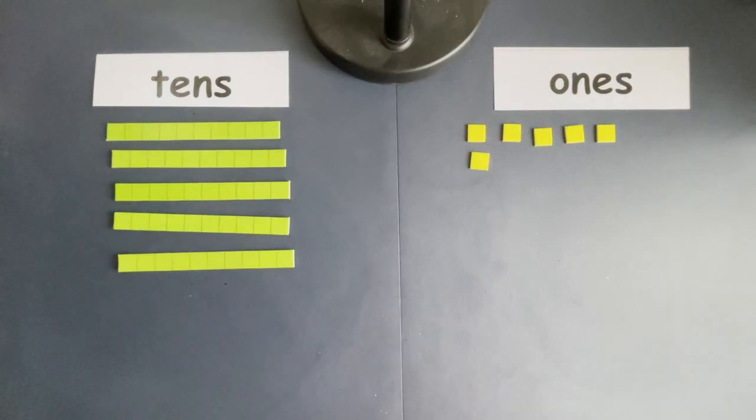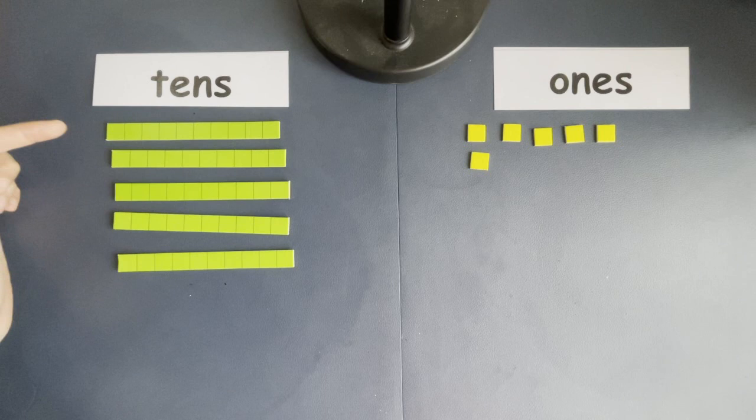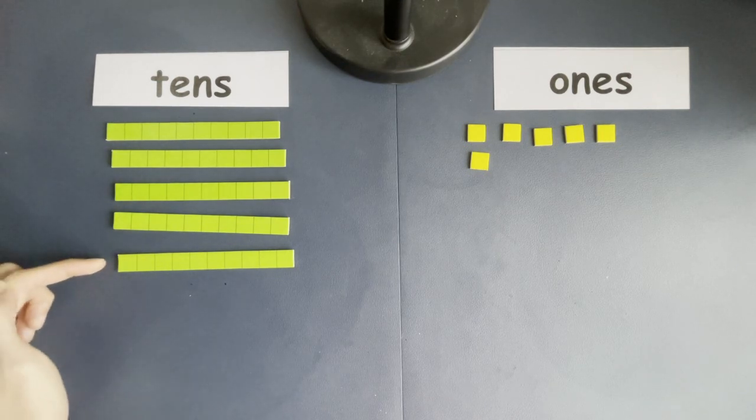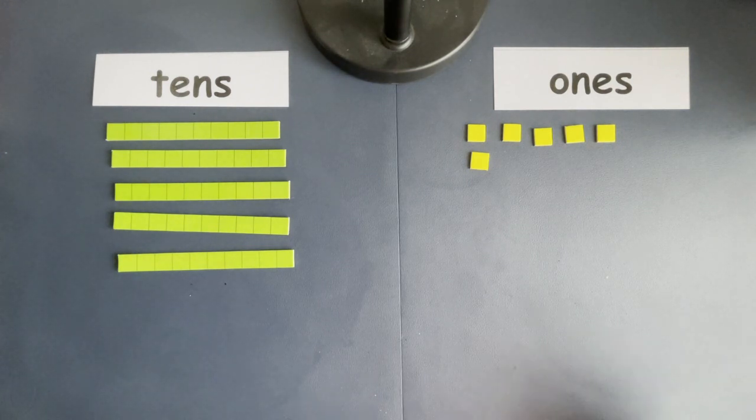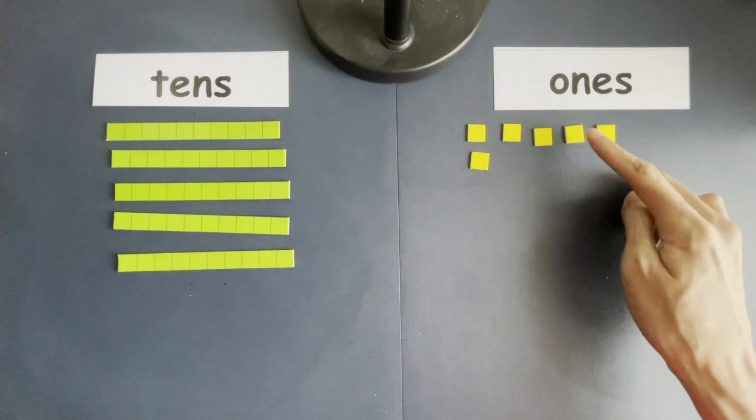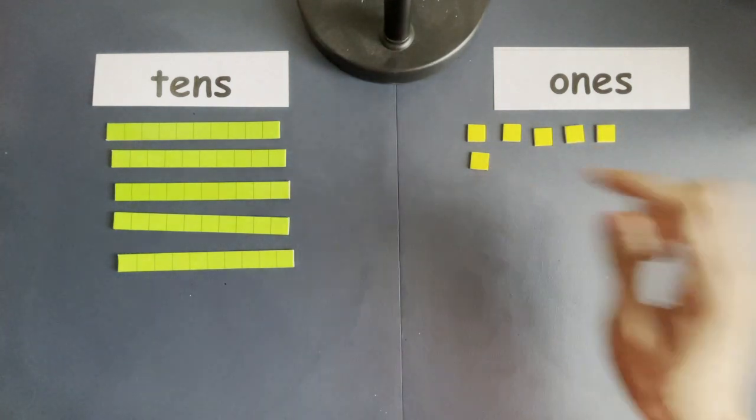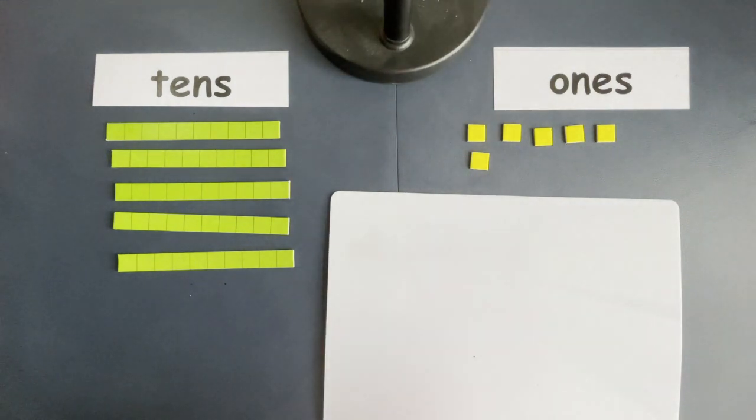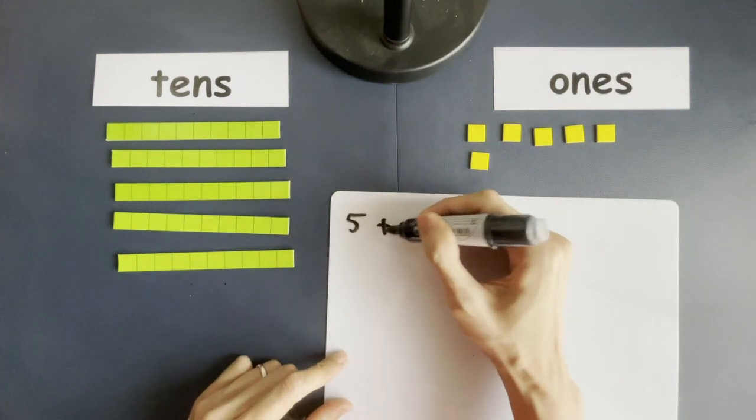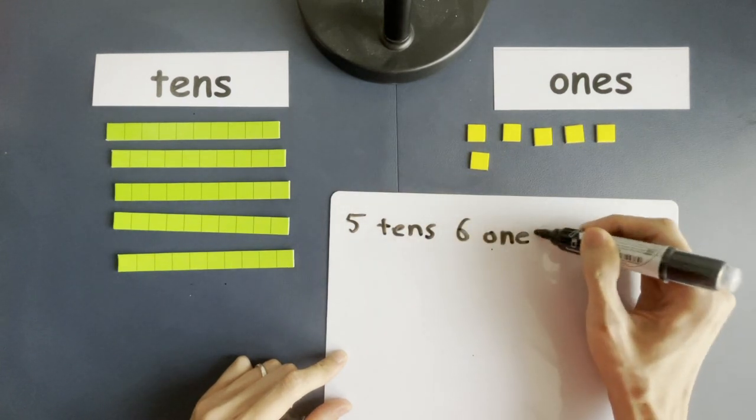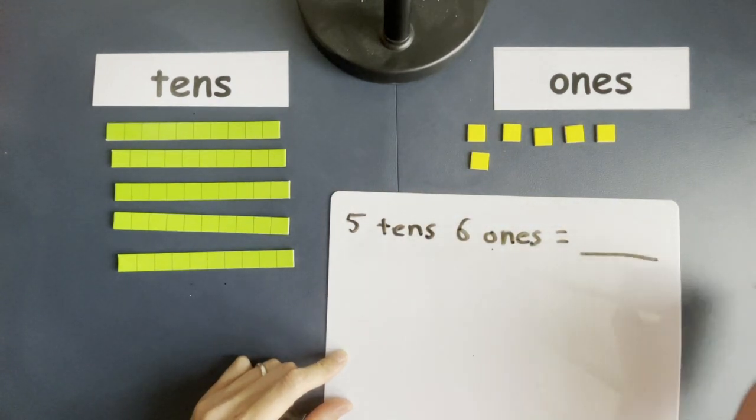Let's do another round. So, how many tens and how many ones are there? One ten, two tens, three tens, four tens, five tens. How many ones are there? One one, two ones, three ones, four ones, five ones, six ones. And once again, how do we write this down? Very simple. We have five tens and six ones. What number does that make?